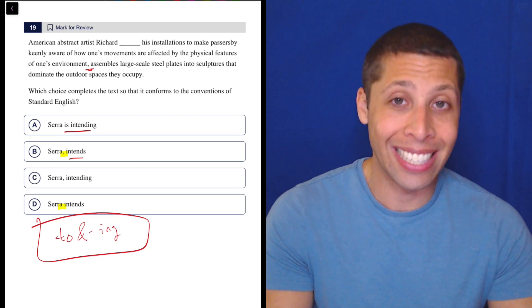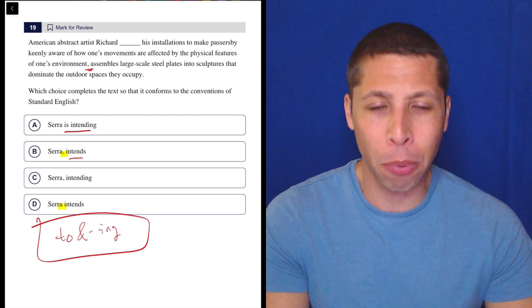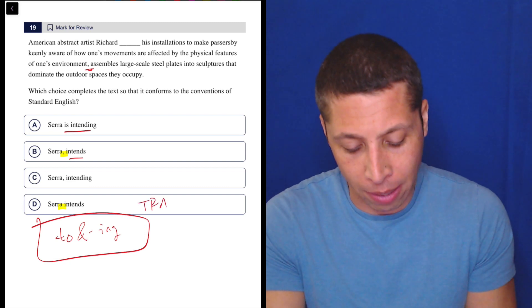But if we stop short and don't realize the sentence continues and then has this other weird break, we're going to fall for the trap. And so that's it. Choice D is the trap.